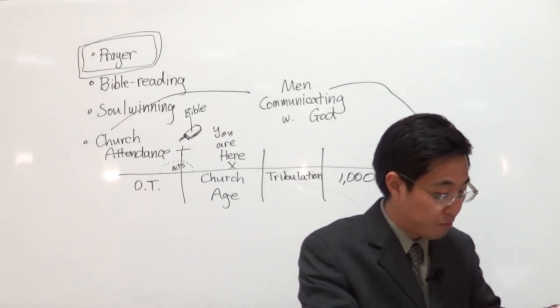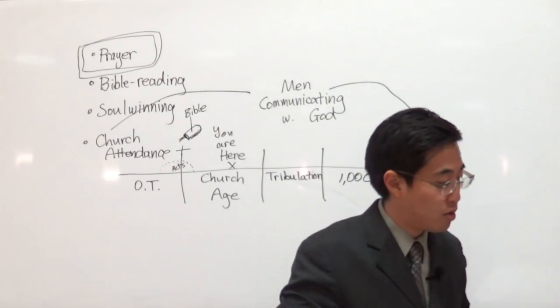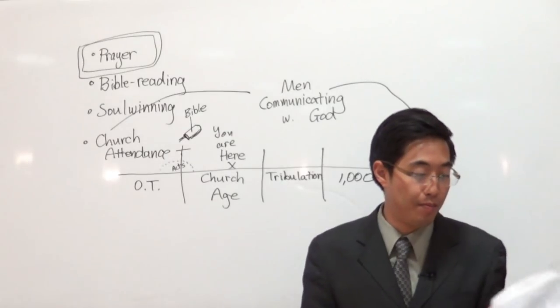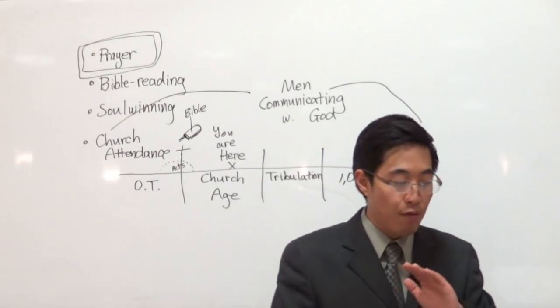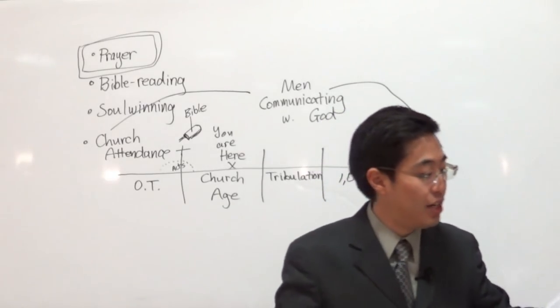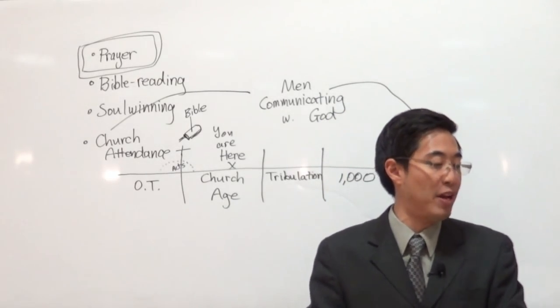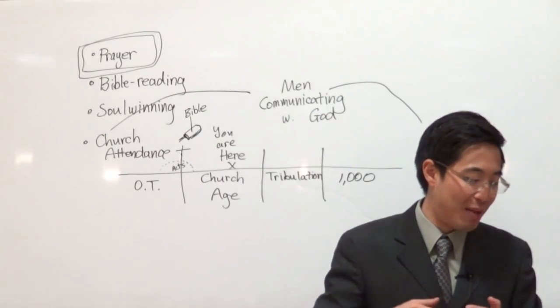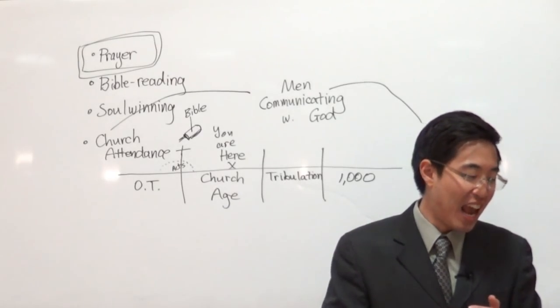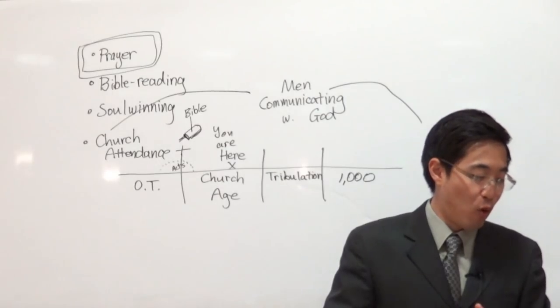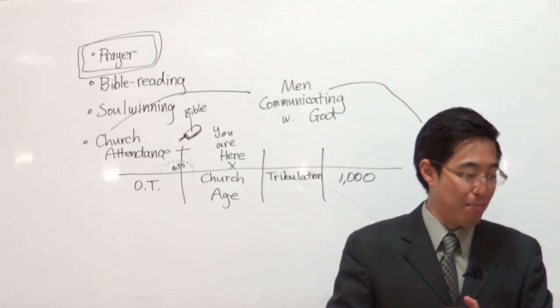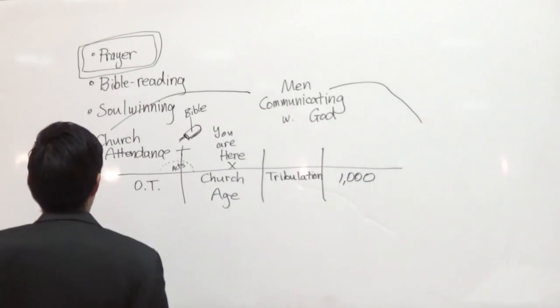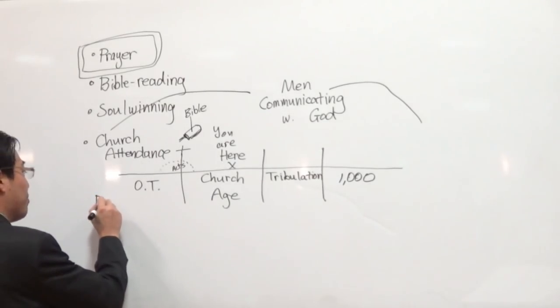Daniel, let's look at the book of Daniel chapter 6. Notice this was in the Old Testament. How often did they pray in the Old Testament? Verse 10. When Daniel knew that the writing was signed, he went into his house and his windows being open in his chamber toward Jerusalem. He kneeled upon his knees three times a day and prayed and gave thanks before his God as he did aforetime. Then these men assembled and found Daniel praying and making supplication before his God. This was during the time of the Old Testament. And Daniel prayed three times a day.